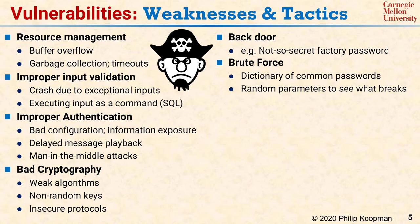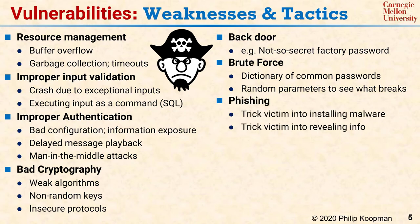Additionally, attackers can feed a system randomly selected values in a technique called fuzzing to see if they can break in. These approaches require very little effort, are easy to automate, and are very often successful. Phishing — spelled with a PH — is when an attacker tricks a victim into clicking a malicious email link, visiting a malicious web page, or entering their password into a fake credential request. These are forms of social engineering, which exploit people as the weak link in the security system.